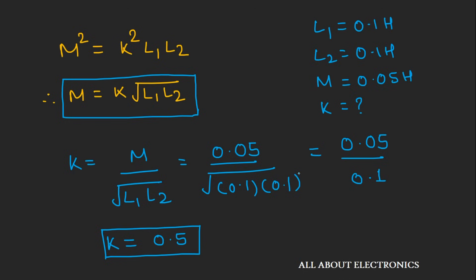So in this way, if we have the values of self inductance and mutual inductance, we can find the coefficient of coupling. Alternatively, if we have the self inductance and the coefficient of coupling, we can find the value of mutual inductance.